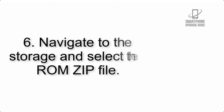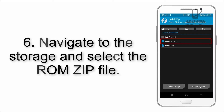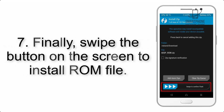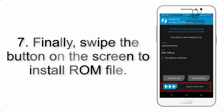Step 6: Navigate to the storage and select the ROM zip file. Step 7: Finally, swipe the button on the screen to install the ROM file.